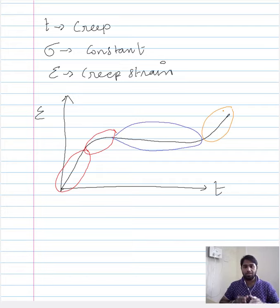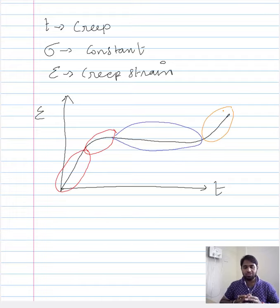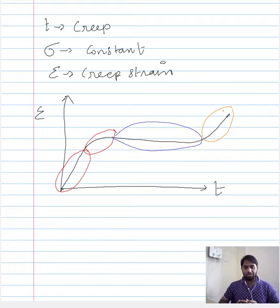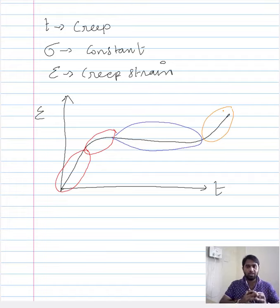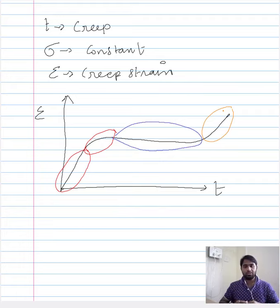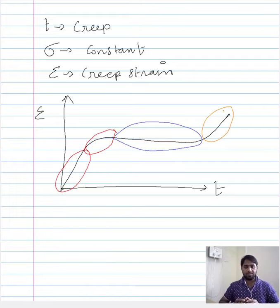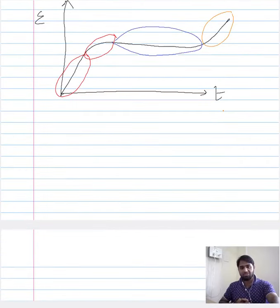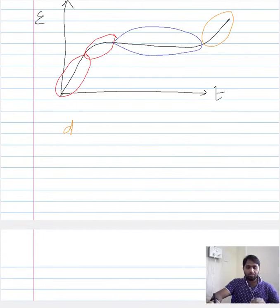Transient creep can also be referred to as decelerating creep. Depending on the duration of instantaneous creep, the description of Stage 1 might vary. When instantaneous creep duration is very small compared to the overall creep duration, Stage 1 will predominantly comprise transient or decelerating creep. Alternatively, treating it as four stages designates instantaneous creep as Stage 1 and transient creep as Stage 2. When instantaneous creep is very quick, the first stage in the four-stage description will be rather minimal.